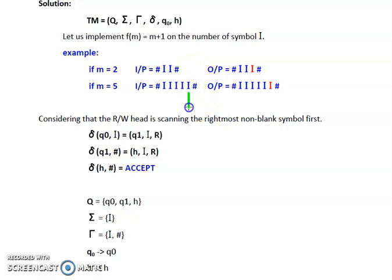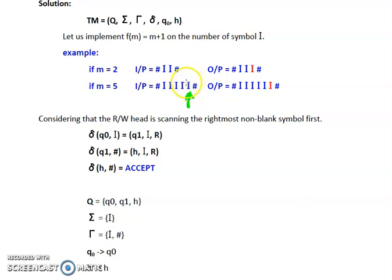Now our read/write head is on i. We are not going to move in the left direction because in the left direction we already know that all the i's are present. What is required is to move to the right direction and replace this particular hash by an i. In order to replace this hash by an i we need to do something with this i also, because currently our read/write head is on this particular i. We will replace the i by i itself because we don't want to remove it. So the i will be replaced by i and then we will move our read/write head to the right direction and replace this hash by an i. So we will obtain six i's when the input was given as five i's.